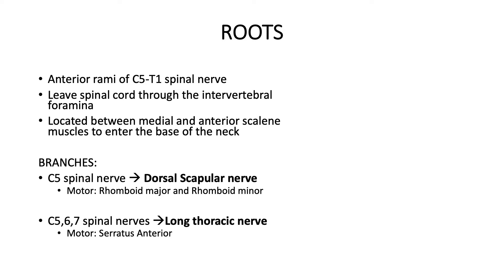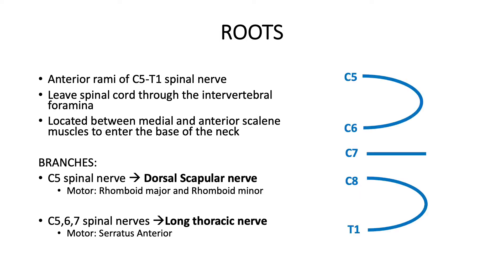Let's take a step back and go back to our starting point, which are the roots. They are formed from the anterior rami of the C5, C6, C7, C8, and T1 spinal nerves. They leave the spinal cord through their respective intervertebral foramina, and in the cervical spine, the spinal nerve leaves above its corresponding level, so that the C5 spinal nerve would leave at the C4-C5 level.